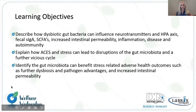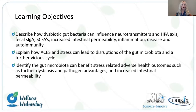Today we have some learning objectives. We will begin by describing how dysbiotic gut bacteria can influence neurotransmitters in the hypothalamic pituitary adrenal axis, including fecal short-chain fatty acids, secretory IgA, intestinal permeability, inflammation, disease, and we will touch upon autoimmunity. We will also explain how ACEs and stress can lead to disruptions of the gut microbiota and contribute to a vicious cycle. We will identify the gut bacteria that can benefit stress-related adverse health outcomes, such as dysbiosis and pathogen advantages, and increased intestinal permeability.